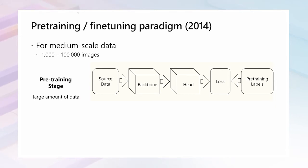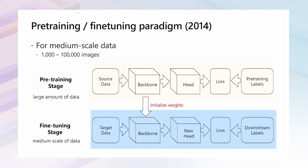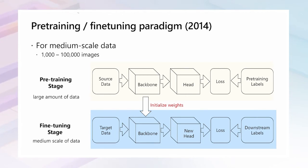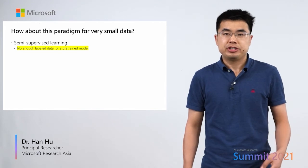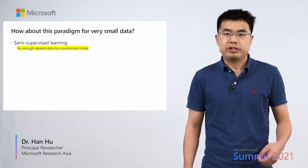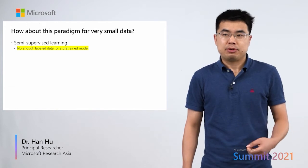Concretely, there are two stages. The first stage is to pre-train a backbone network using a large amount of pre-training data. In the second stage, the pre-trained weights are used to initialize the backbone network of the downstream task. So how about this pre-training and fine-tuning paradigm for very small data regimes — for example, less than 1,000 examples?